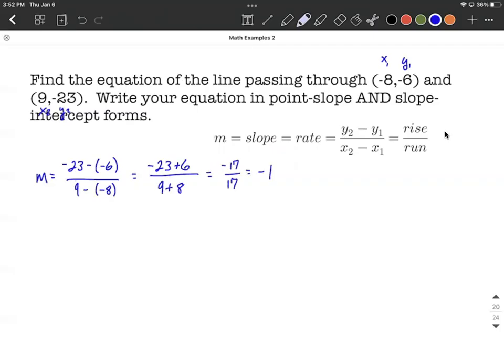Now that we have our slope for our line, let's try to find the point-slope form. So with the point-slope form, go ahead and write out our formula. That's y minus y1 equals m times x minus x1.